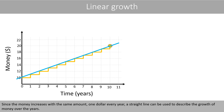This means that the doubling time is ten years. Since our money increases by the same amount — one dollar every year — a straight line can be used to describe the growth of the money over the years.